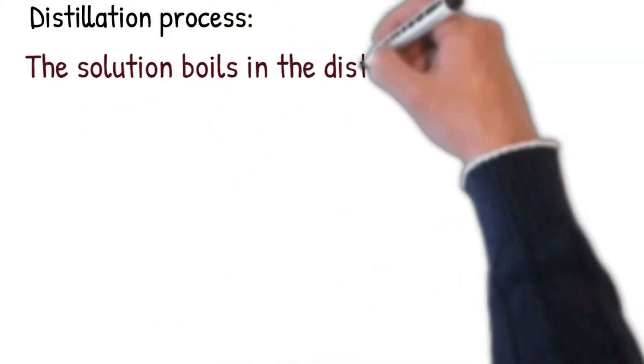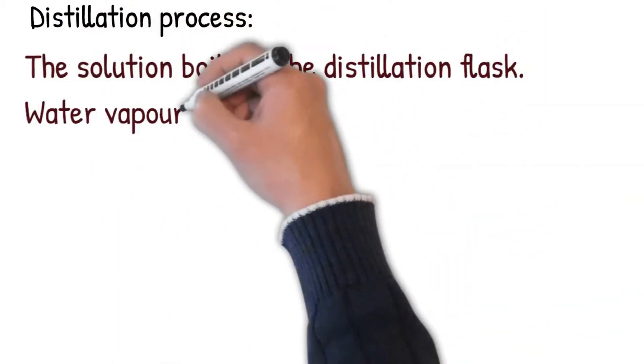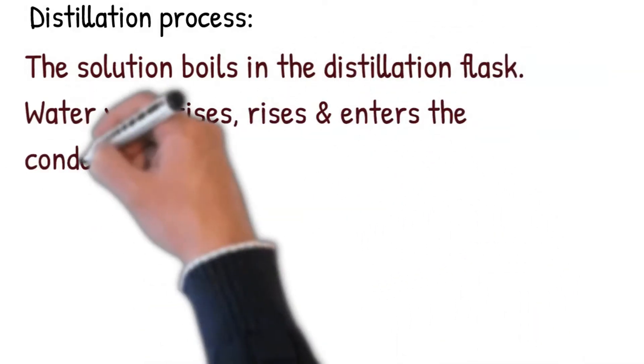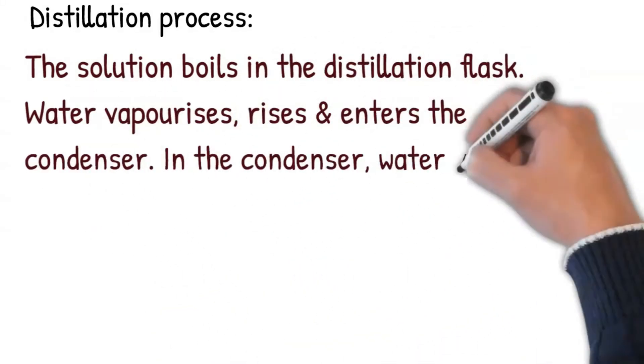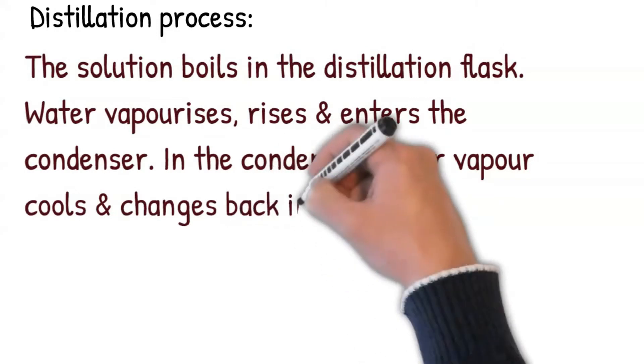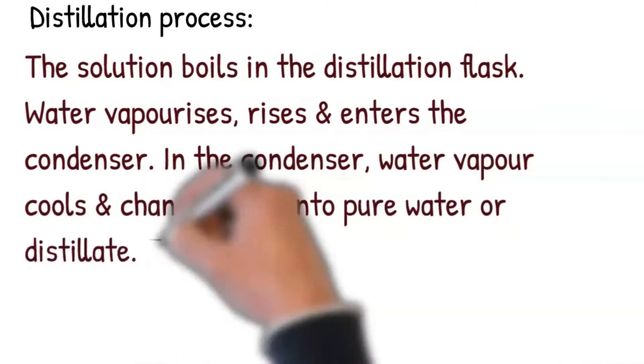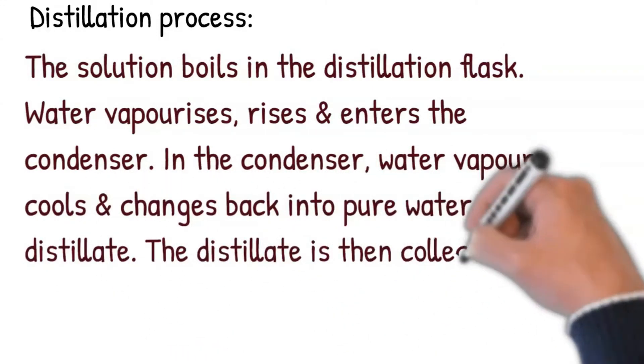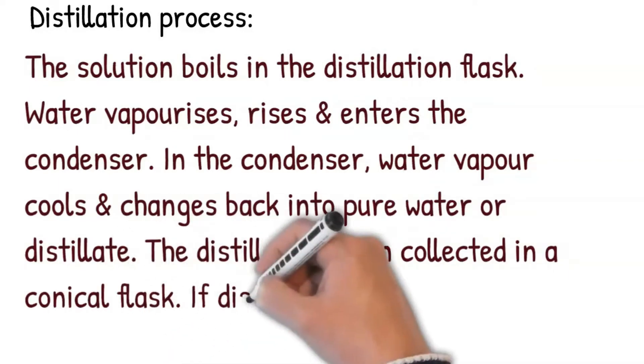Distillation process. The solution boils in the distillation flask. Water vaporizes, rises and enters the condenser. In the condenser, water vapor cools and changes back into pure water or distillate. The distillate is then collected in a conical flask. If distillation is allowed to carry on, salt will be left in the distillation flask.